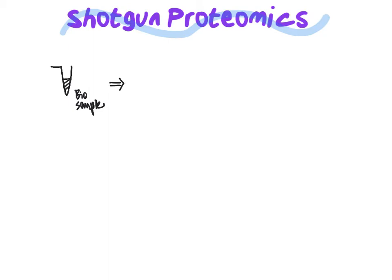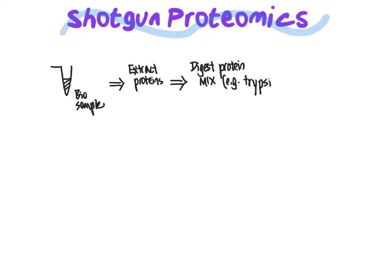That biological sample would be used to extract the protein mixture, ideally separating those proteins from other biomolecules ubiquitous within the cell. From there, that mixture of proteins would be digested using trypsin or some other protease such as proteinase K, which is a broad spectrum protease that digests at a variety of different positions within a peptide. So the protein mixture is digested using one or more proteases, resulting in a peptide mixture.